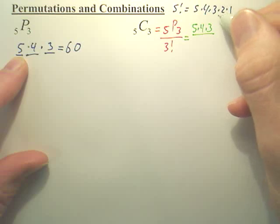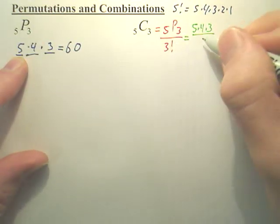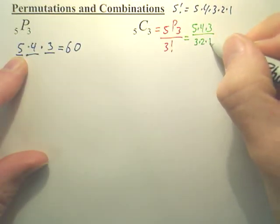And on the bottom, 3 factorial, according to factorials, you start with this number, work all the way to 1. So it would be 3 times 2 times 1.